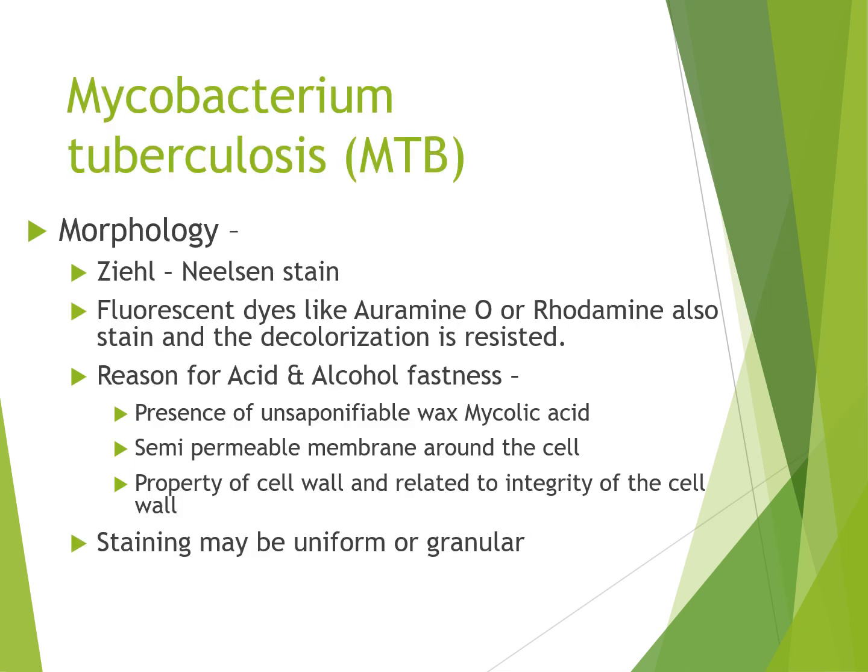For morphology, the Ziehl-Neelsen stain is used. Once stained by carbol fuchsin, it resists decolorisation by 20% sulphuric acid and absolute alcohol, and it is acid and alcohol fast. Fluorescent dyes like Auramine O or Rhodamine also stain and decolorisation is resisted. The reason for acid and alcohol fastness is the presence of unsaponifiable waxy mycolic acid, a semipermeable membrane around the cell, and properties related to the integrity of the cell wall. The staining can be uniform or granular.